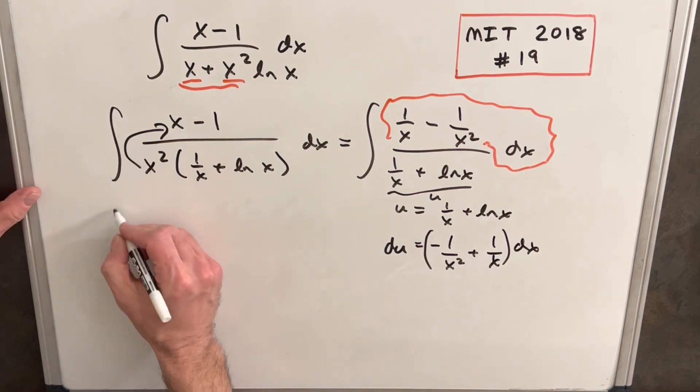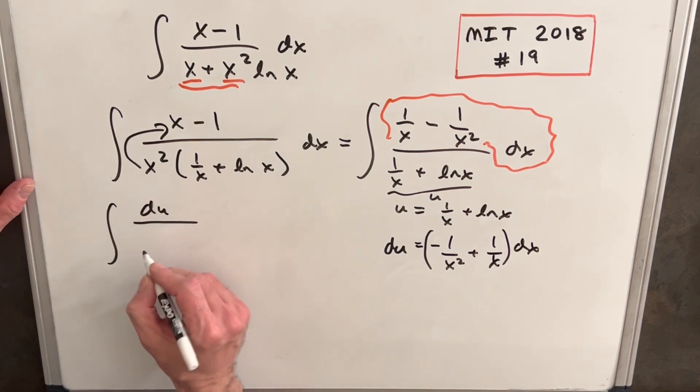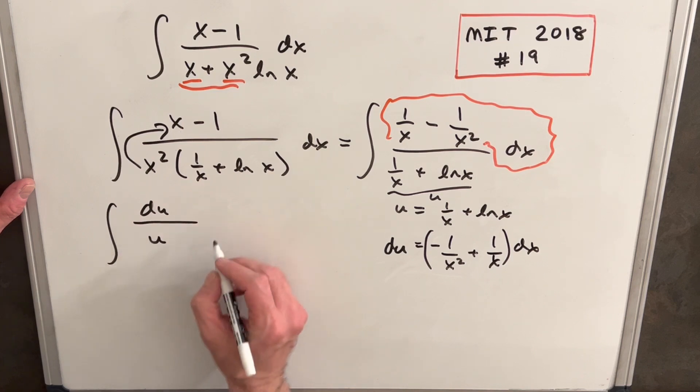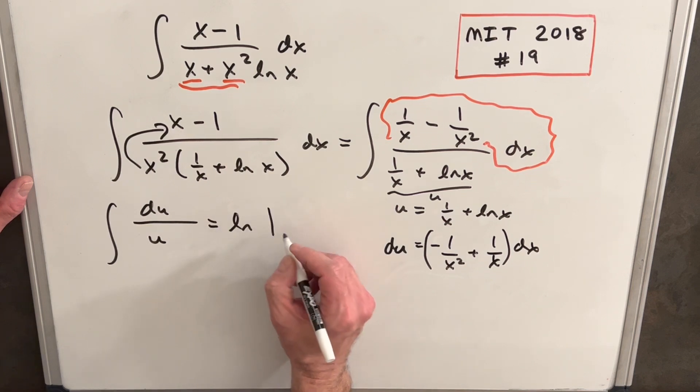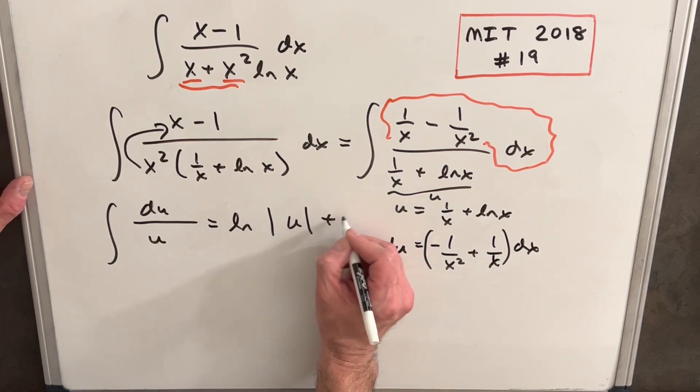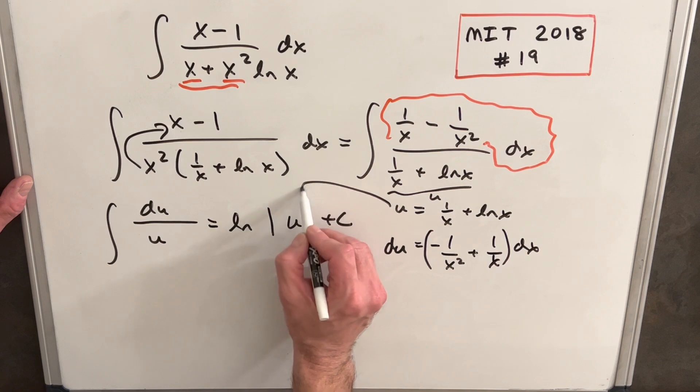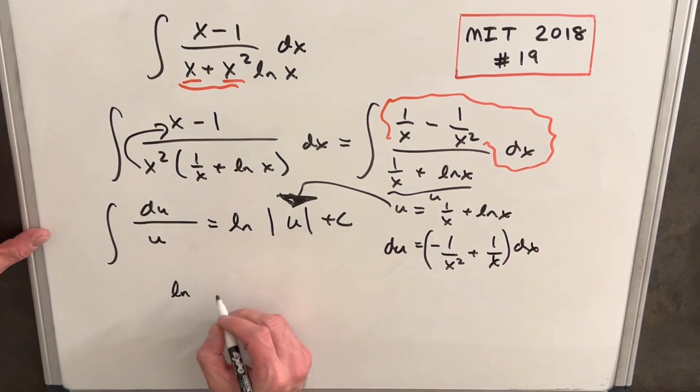So let's make that substitution. We're going to have our du in the numerator and we'll have just u in the denominator. Very common integral. This is just going to be natural log absolute value of u plus C. We'll back substitute this here.